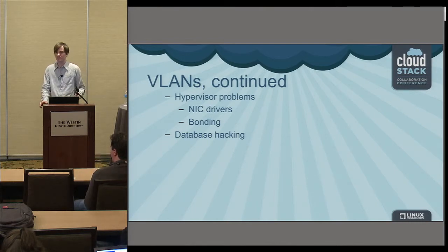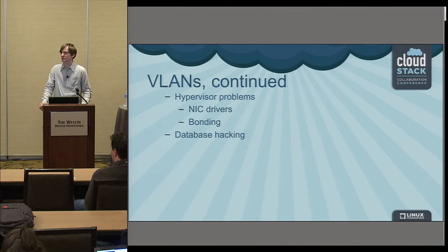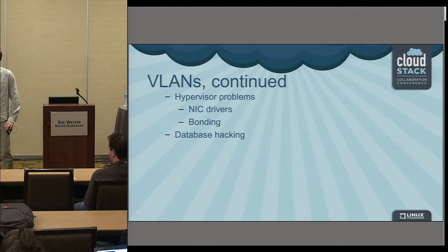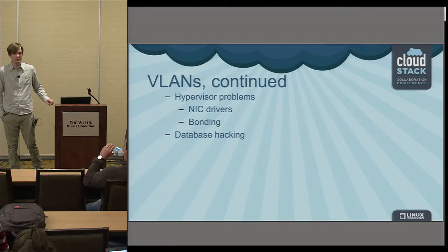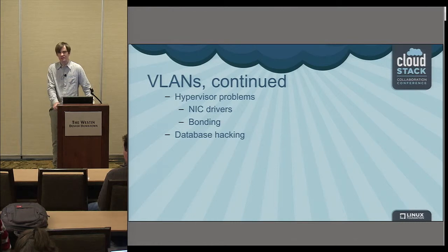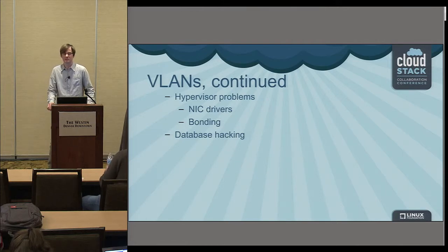With active-passive bonding, you might set it up and it works because the active NIC is fine, but then that NIC goes away and the passive NIC doesn't work. So you'd want to do a manual failover test. The audience asked whether these bonding issues are CloudStack or hypervisor issues — the answer is mostly hypervisor, though CloudStack can do some configuration with bonding, so you should check the CloudStack documentation.